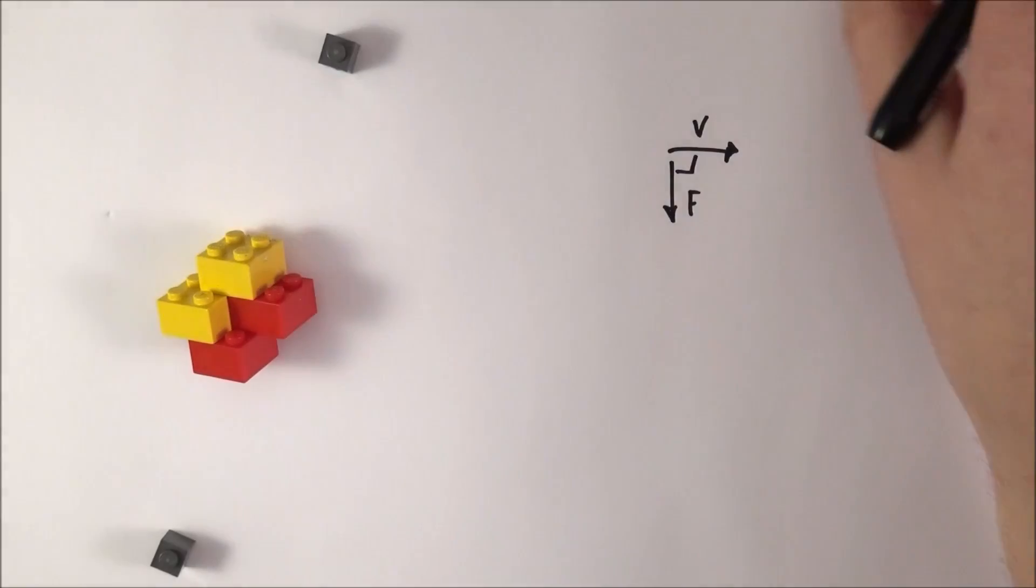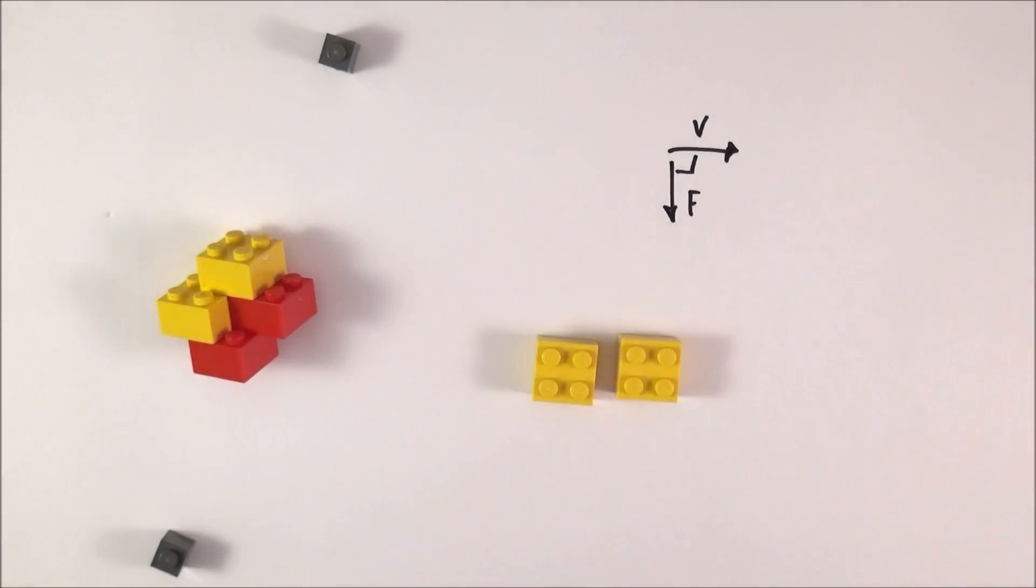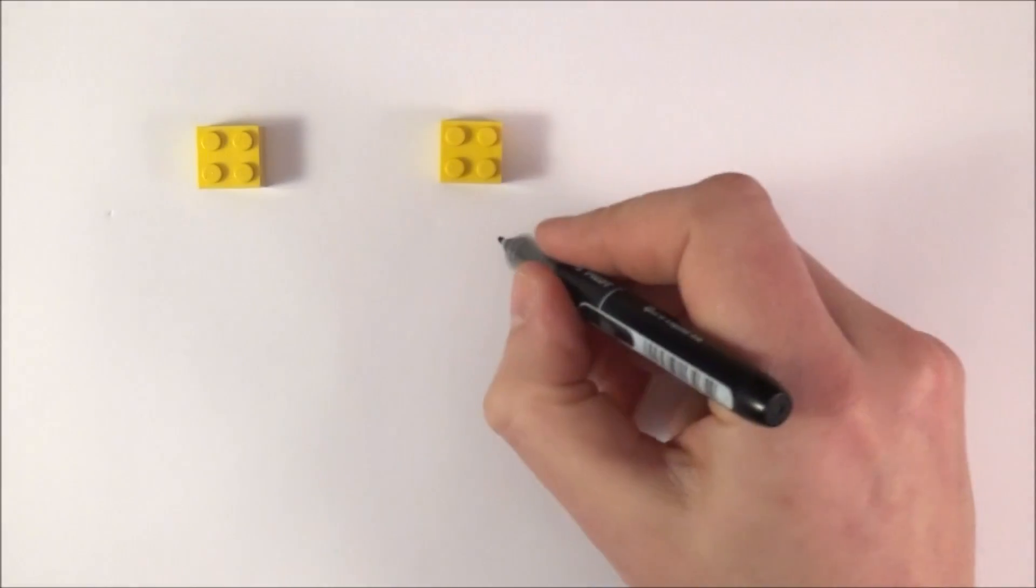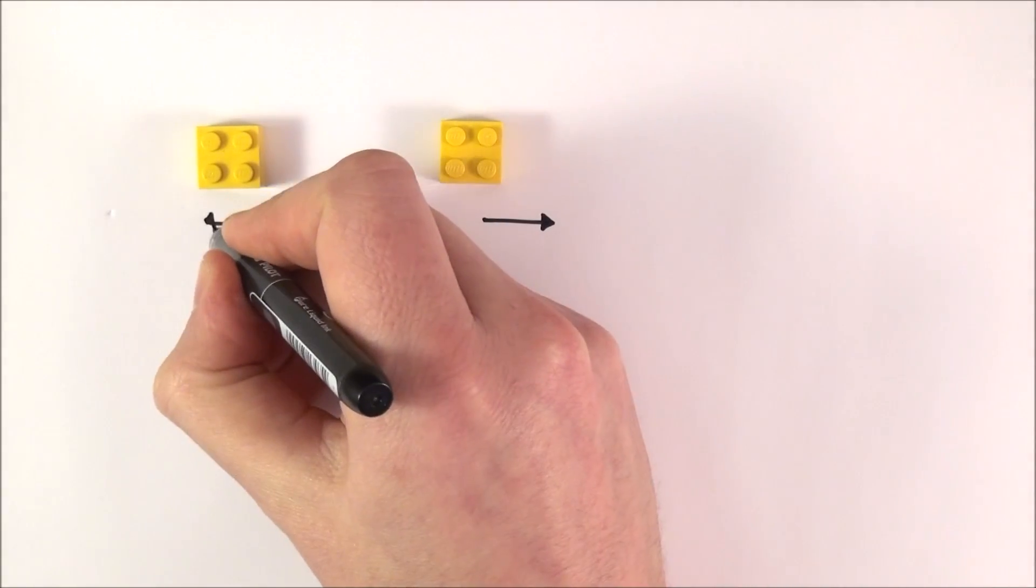The question, though, of why a proton can sit next to a proton is a bit more tricky. And that's what this video is really all about. So here I have a positive charge and another positive charge. Now, at this time, if they're both positive, they're both going to feel a repulsive force.